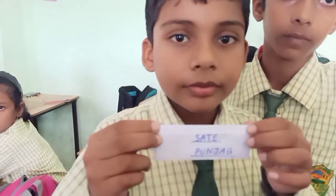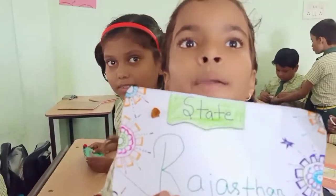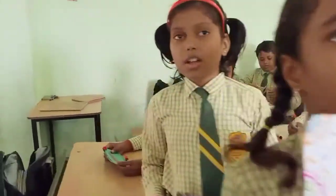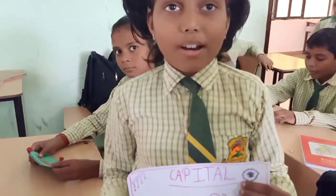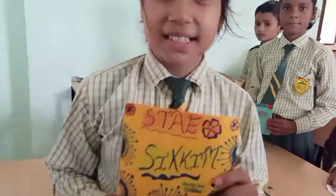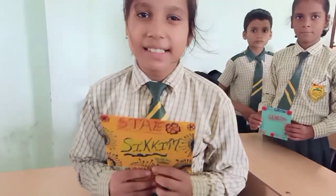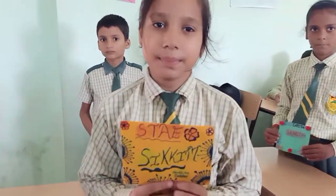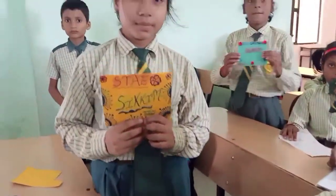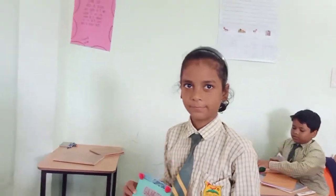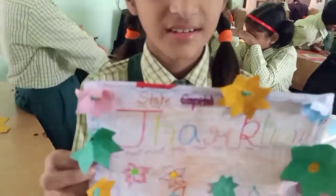The name of the state is Rajasthan and the capital of Rajasthan is Jaipur. Very good. The next state name is Sikkim and the capital of Sikkim is Gangtok. Very good.